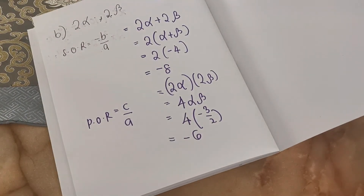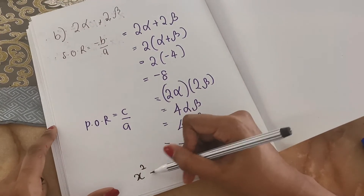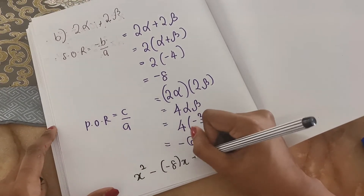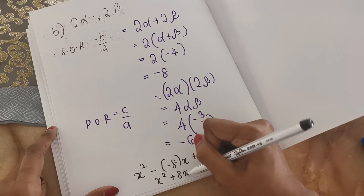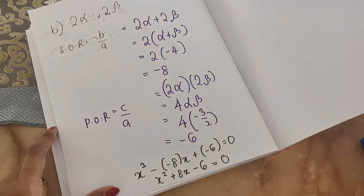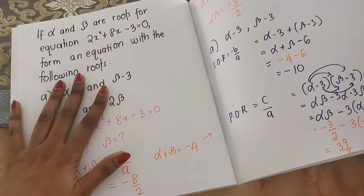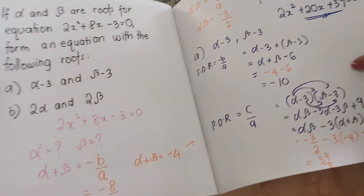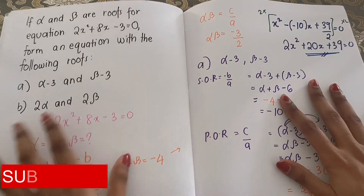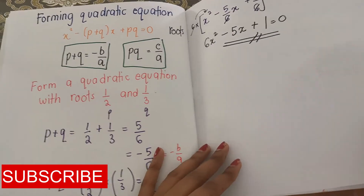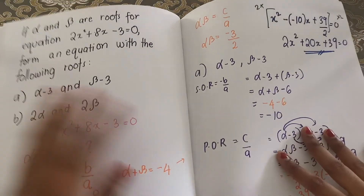Writing the equation using the roots we found: x² minus (negative 8)x plus (negative 6) equals 0, which becomes x² + 8x − 6 = 0. If you can understand this concept, you can solve any question that requires you to form a quadratic equation. All you need to know is how to find the sum of roots and the product of roots. Keep doing more practice, and see you in my next video.